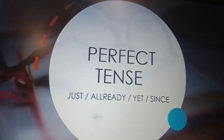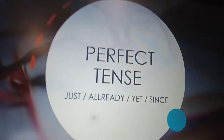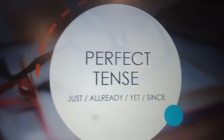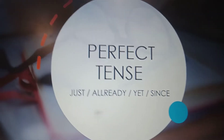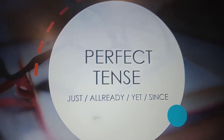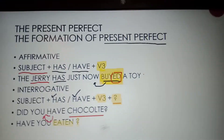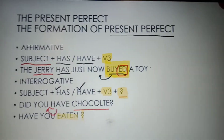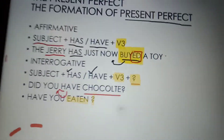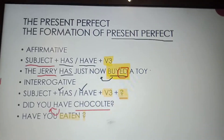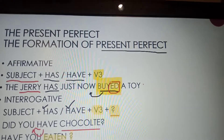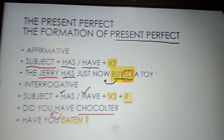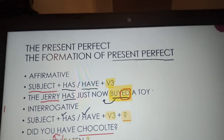For example, I can say 'My class ended just now.' You need to remember that perfect tense is always in the third form (V3) because the action has been done. Whether the sentence is affirmative, declarative, or interrogative, it will always use V3.